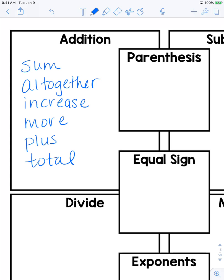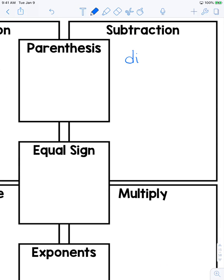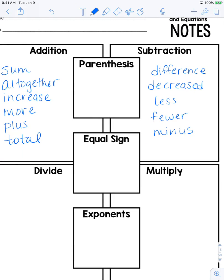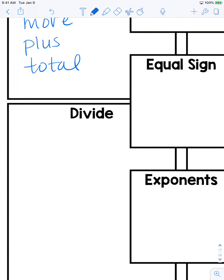Sum, altogether, increase, more, plus, total. There are more, but these are going to be some of the most common ones that you see in word problems that signal addition. Over here to subtraction, we have a few words that are common: difference, decreased, less, fewer, and minus. Now if you read a word problem and you don't see any of the words listed here, or you don't see any keywords at all, you have to think about what's happening in context and figure out which operation makes the most sense.